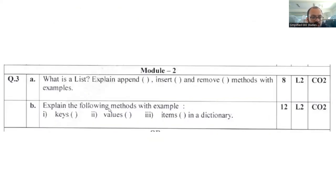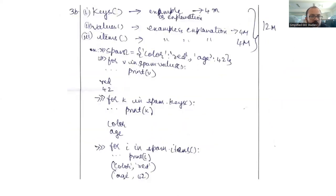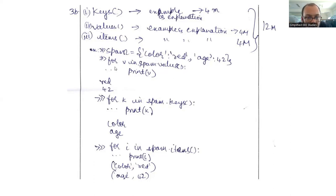Question 3B: explain the keys, values, and items methods of a dictionary with suitable examples. In a dictionary, items are written as key-value pairs — for example, color: 'red', age: 42. For values, use 'for v in spam.values(): print(v)' — the result will be 42. For keys, use 'for k in spam.keys(): print(k)' — the result will be 'color', 'age'. Write the example in this fashion for each method and you can easily get 12 marks.